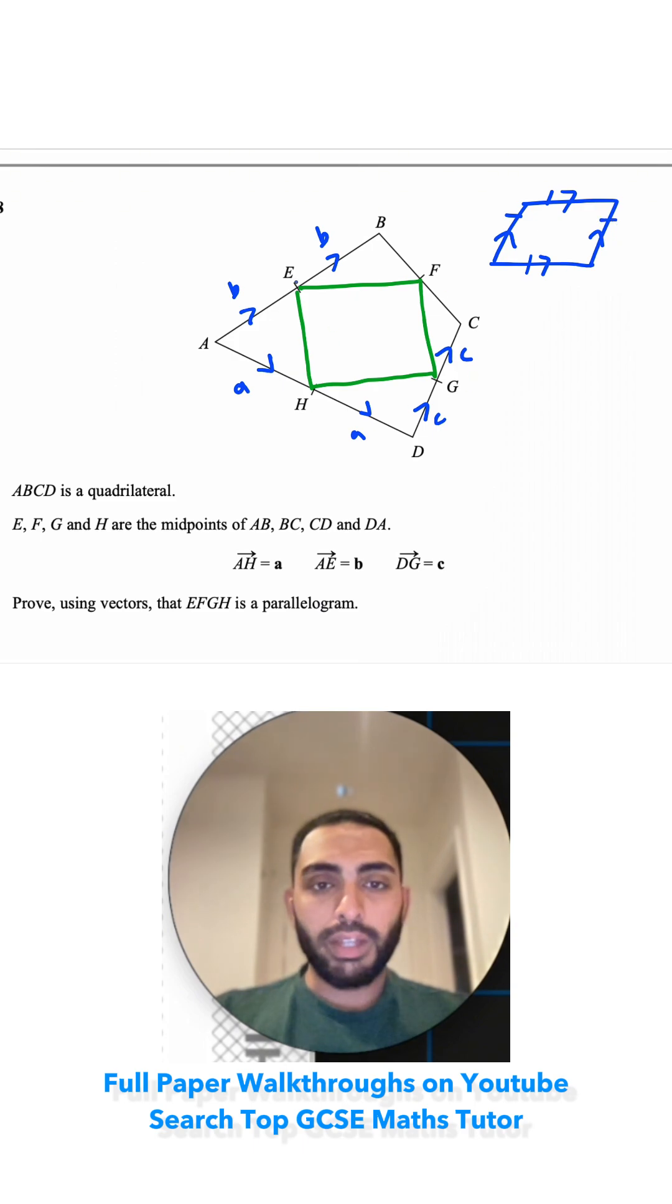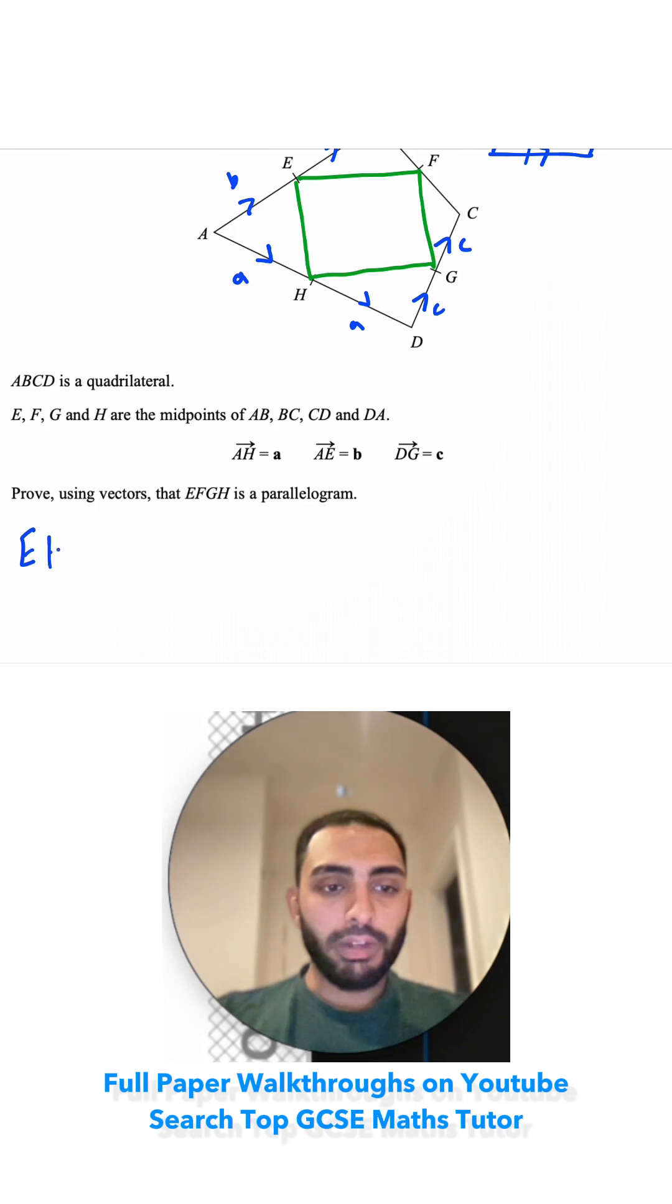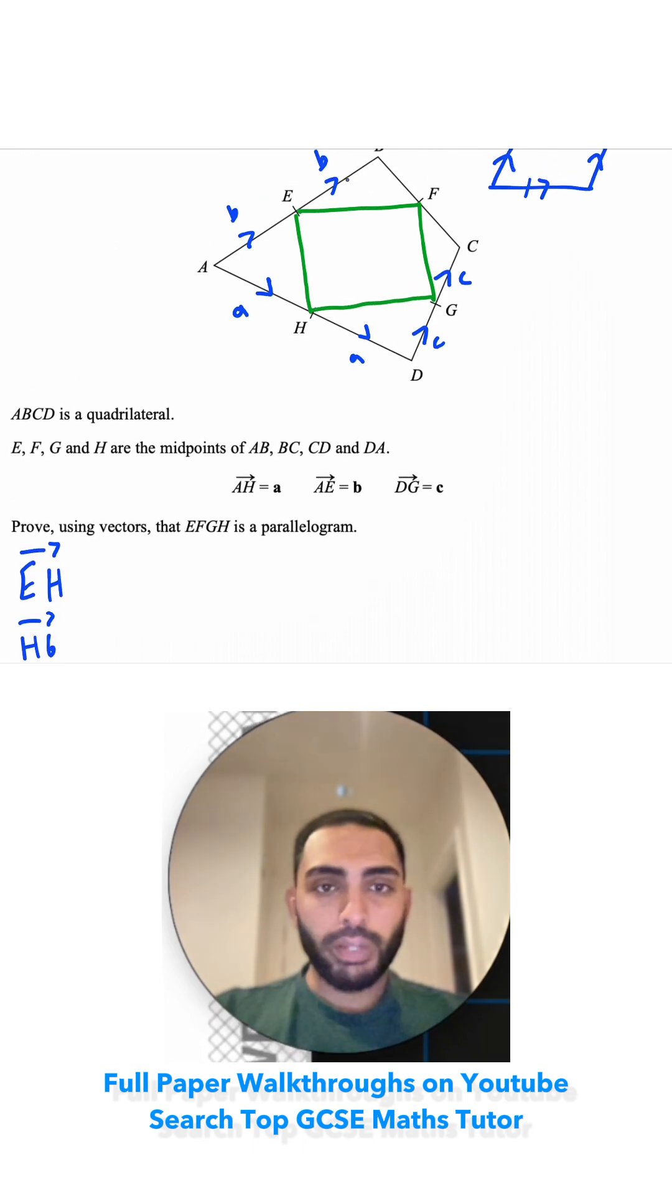We're going to have to find all of these sides. Let's do the easy ones first that don't have the BF or C in them. We'll do EH and HG first. These two will be quite simple because we have the vectors for these.